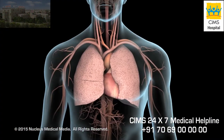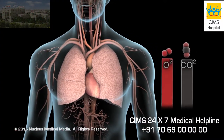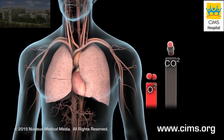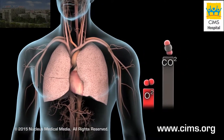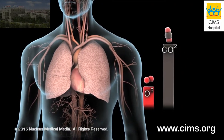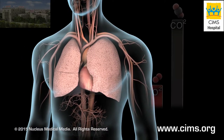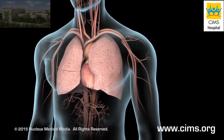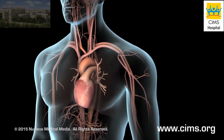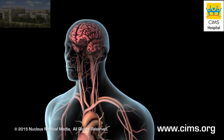If you have severe respiratory problems, the oxygen levels in your blood may drop too low, or the carbon dioxide levels may rise too high. Either of these conditions can result in damage to your vital organs, including your heart and brain.